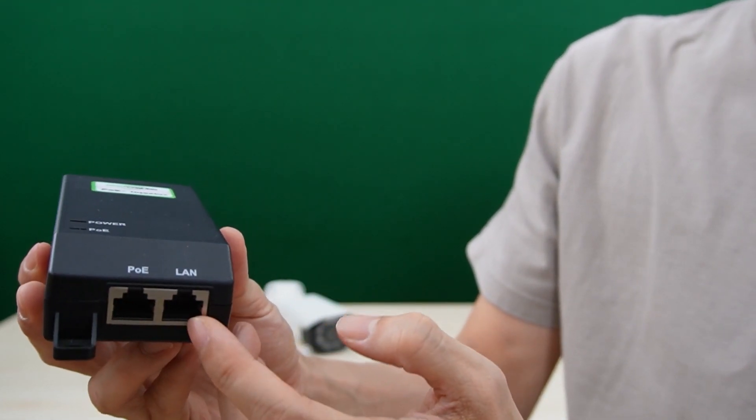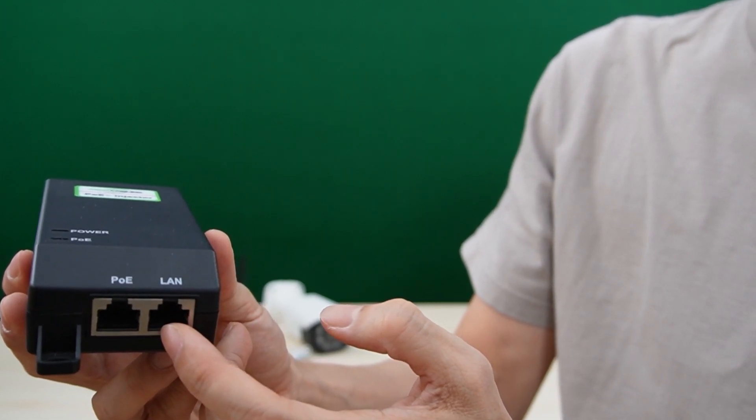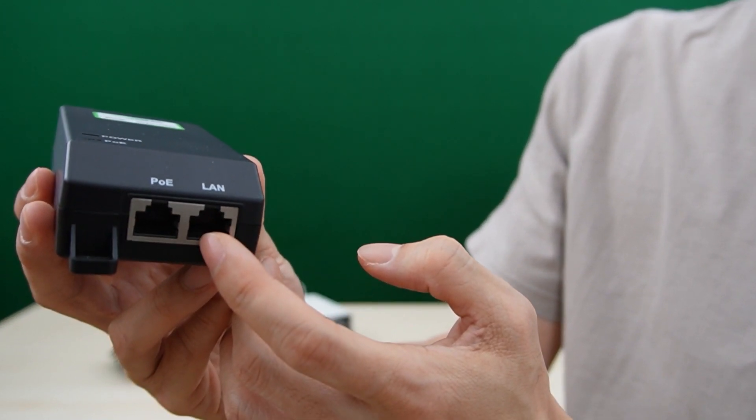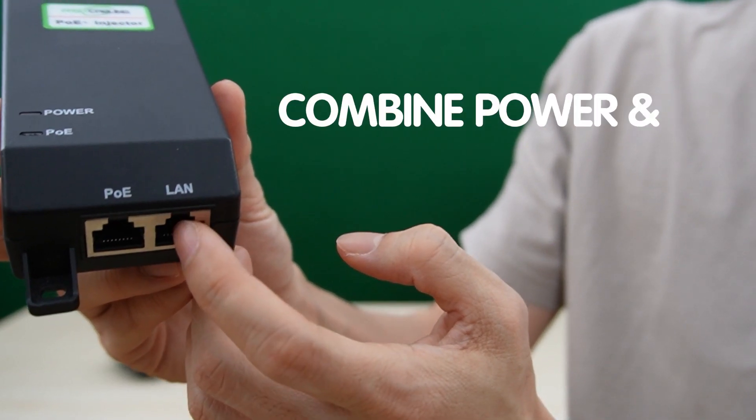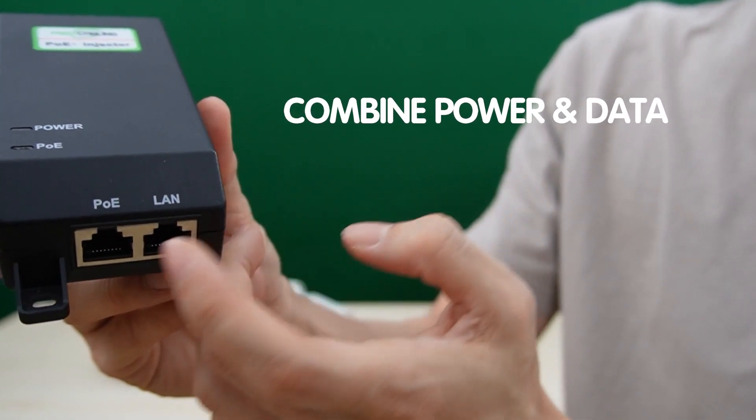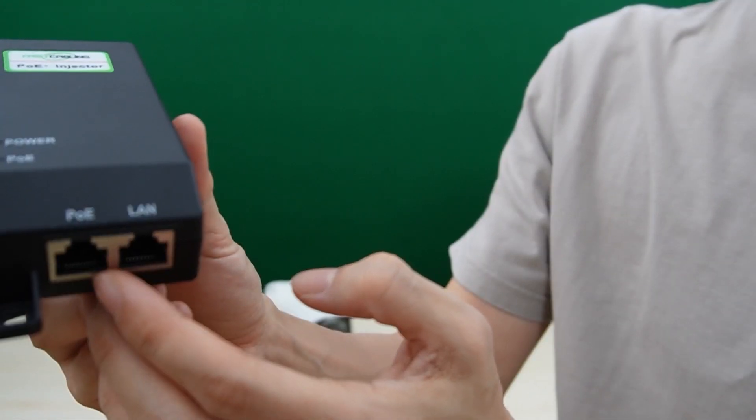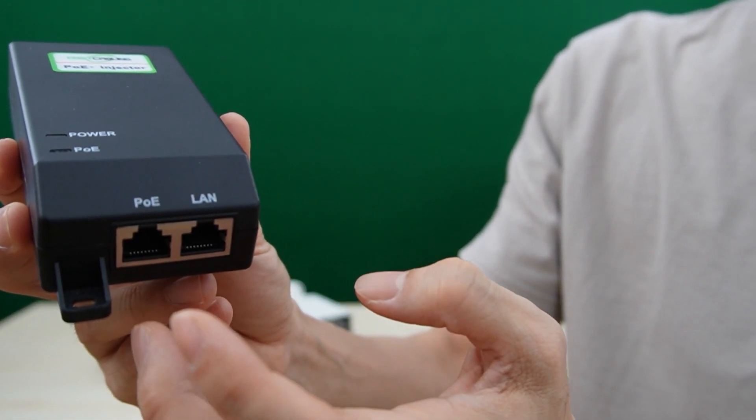And here we got two ports. One is the LAN port, it's supposed to connect the router to have the internet access. Another one is the PoE port. It will combine both power and data and send to the edge device such as the IP camera and access point.